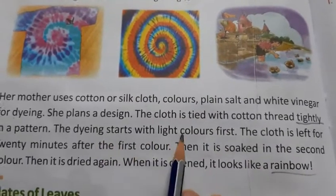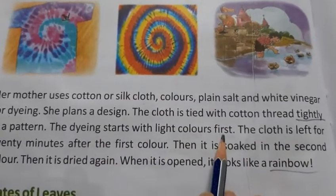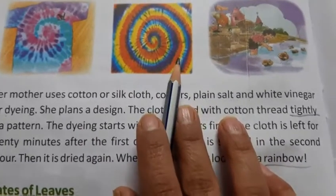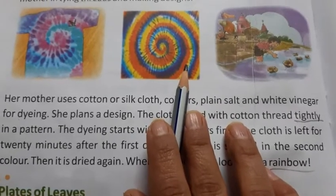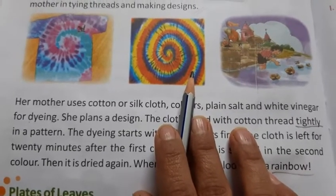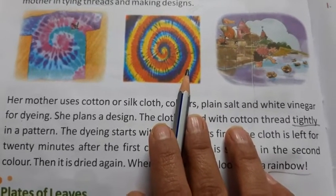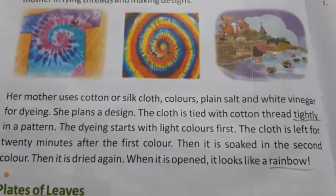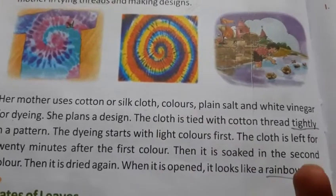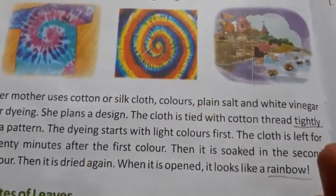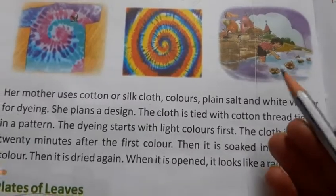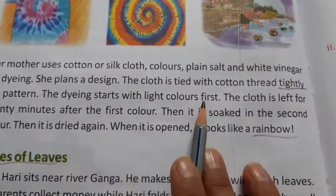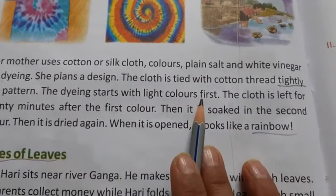The dyeing starts with light colors first. Pehle dyeing mein light color use kiya jaata hai. Because if we use dark color first, then light color will never show on top of dark. But dark color shows very easily on top of light. So first, which color will we apply? Light color. The lightest color among these is yellow, so first yellow color is applied.